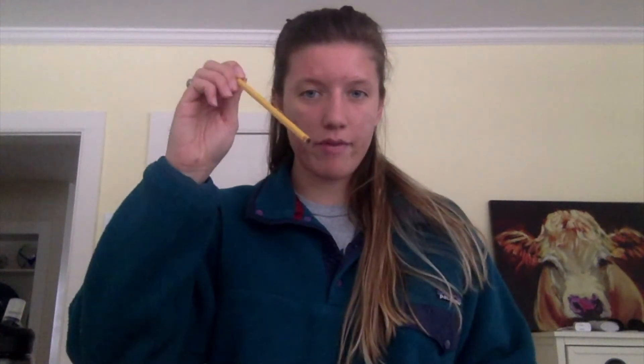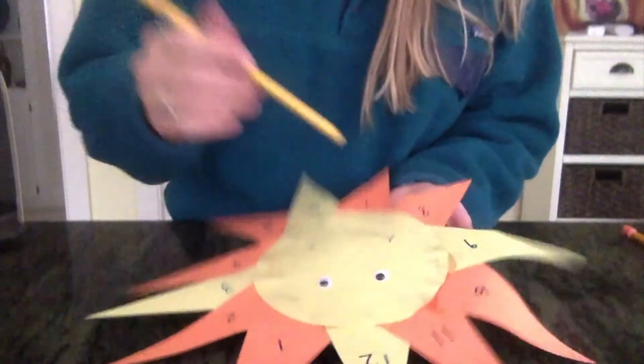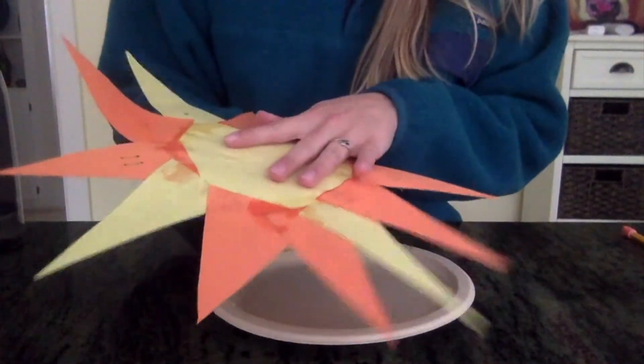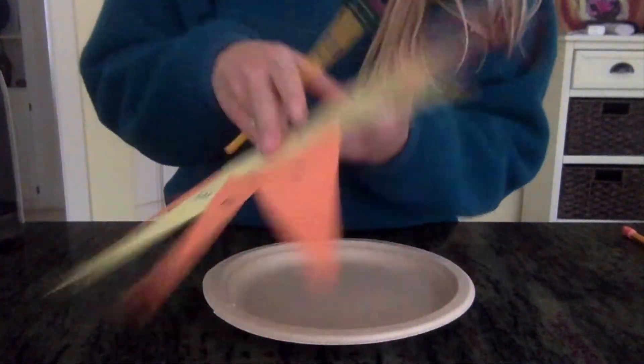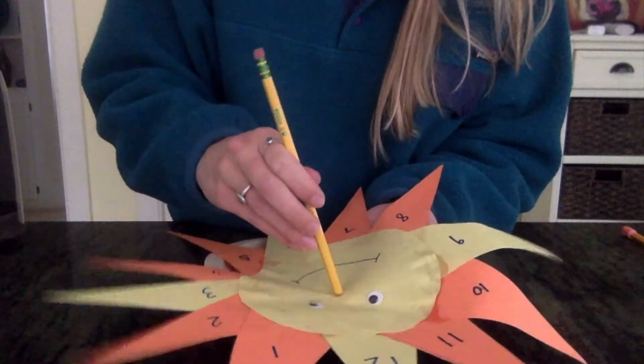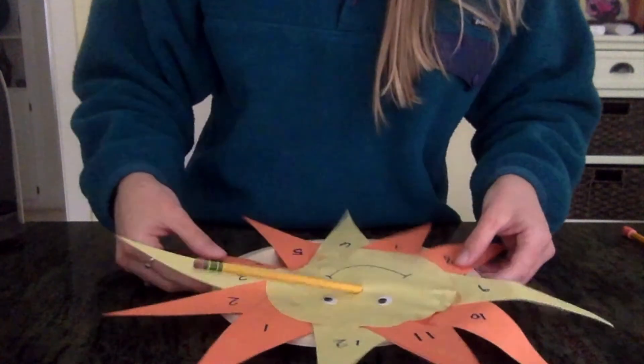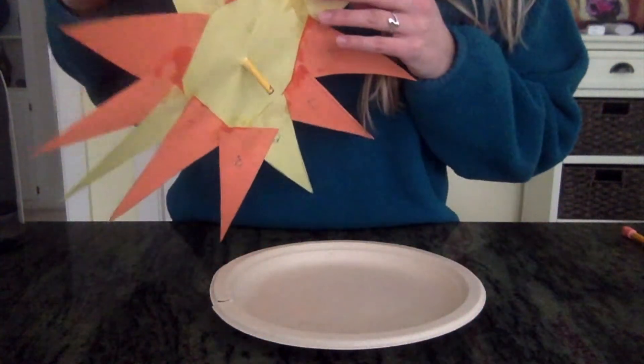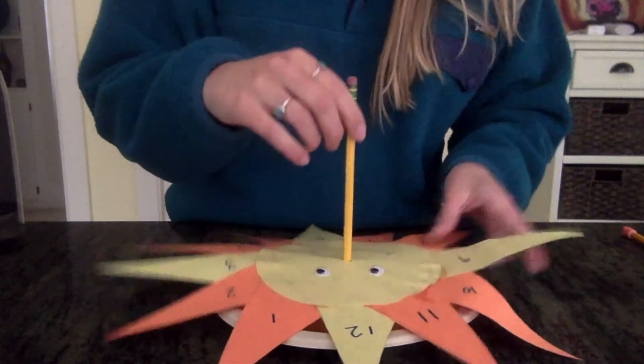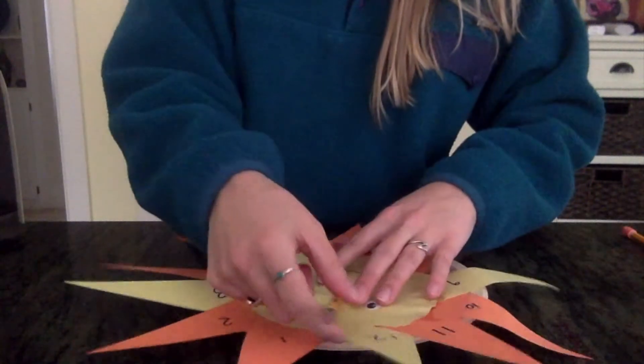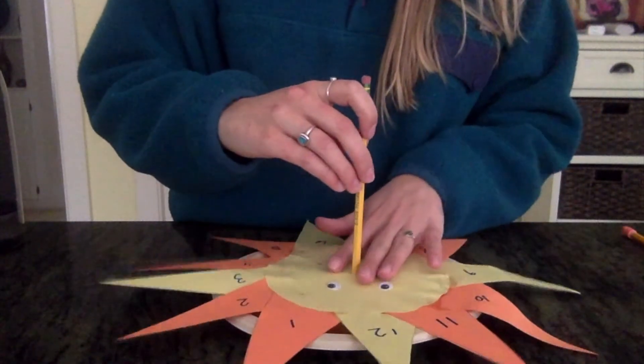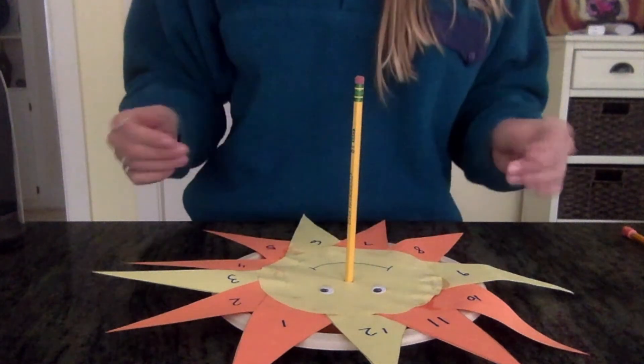And we are going to take our pencil that does not have a point on it, and we are going to punch it through the nose hole. So feel free to just put your two fingers right here. That way you can support the pencil coming through. And just kind of just like that. And then if you have a paper plate or styrofoam or anything lying around the house, that'll work.